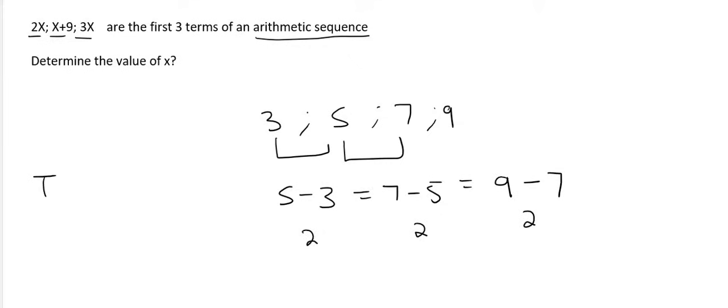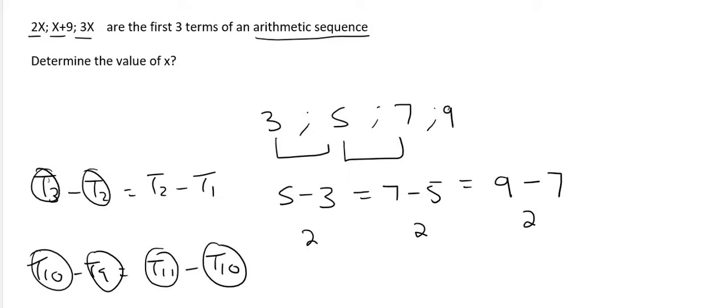So you could say something like t3 minus t2 is always the same as t2 minus t1. Or you could say t10 minus t9 is the same as t11 minus t10. Or whatever you like. As long as you always say a term on the right minus a term to the left.